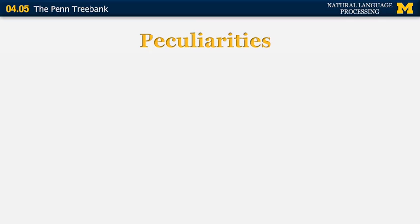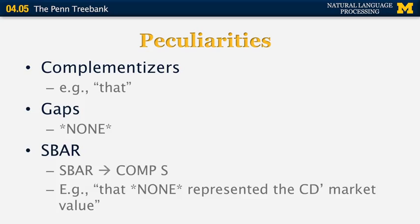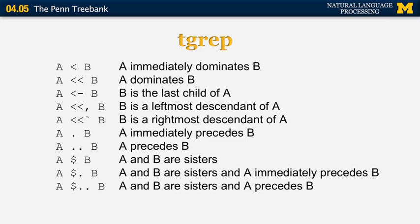The Penn Treebank includes things like complementizers, for example the word 'that'. It includes gaps — for example, if you have 'Mary likes chemistry and hates biology', the subject of the second verb 'hates' is also Mary, and it appears as a gap in the parse tree labeled with the string *none*. It also includes a special category called S-bar from X-bar theory — for example, in 'I don't believe that he will come tomorrow', 'that he will come tomorrow' is an S-bar. There is also a tool to search the Penn Treebank for specific configurations of non-terminals and terminals, using operators like A < B meaning A immediately dominates B, and A << B meaning A is somewhere above B in the parse tree.